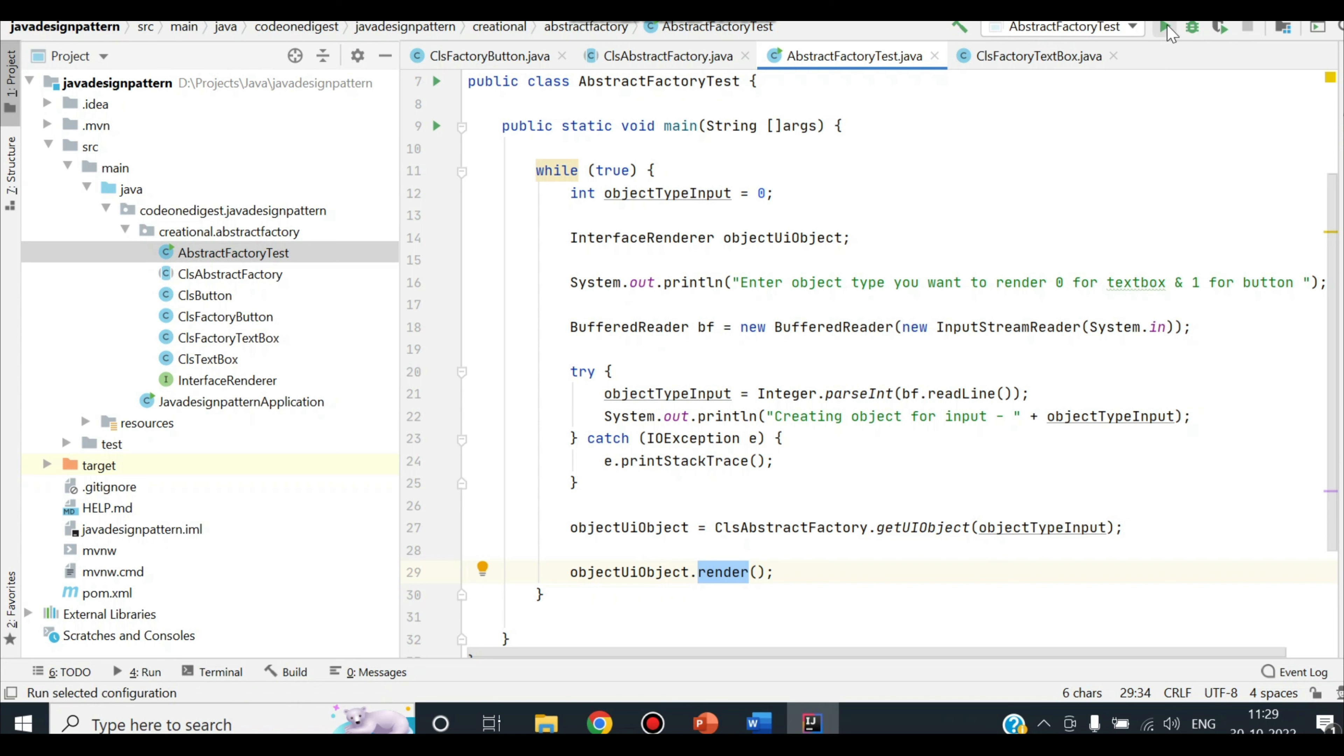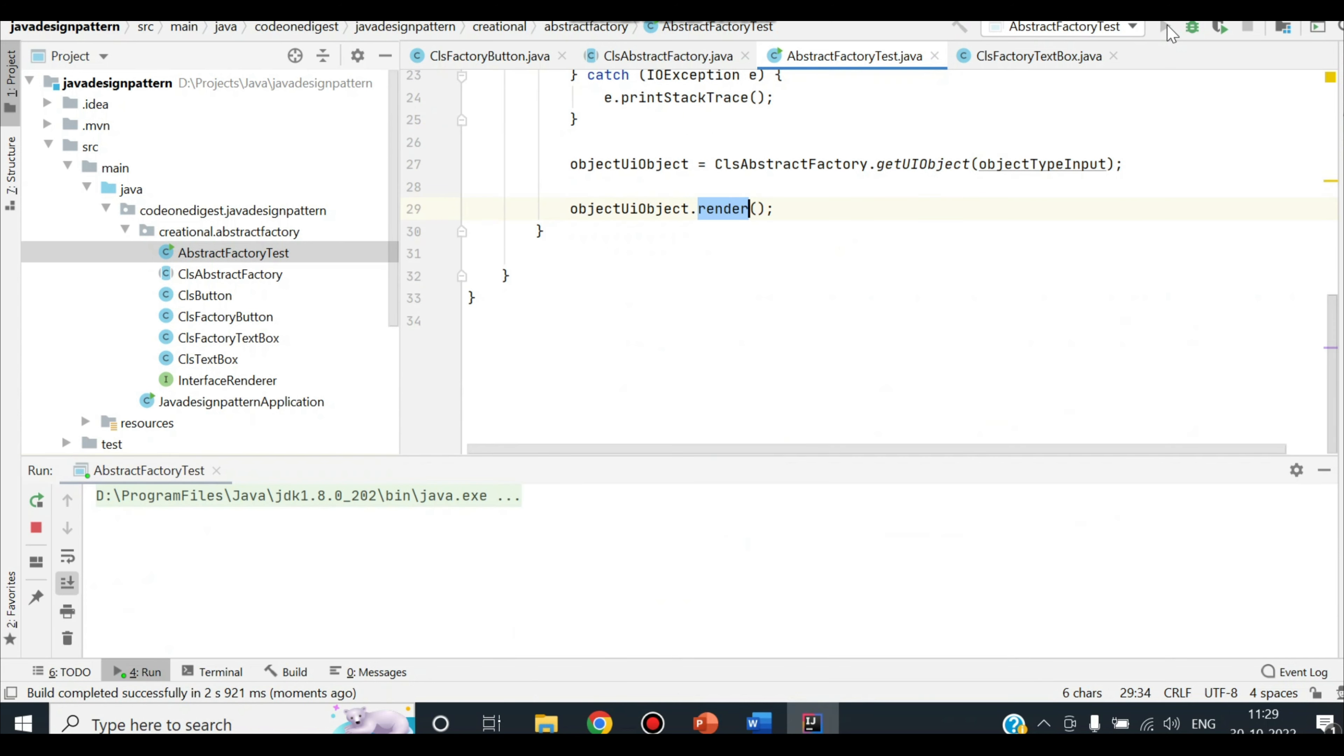I will just run this test and show you. So if I give zero as an input and press enter, it says creating object for input zero and text box is created and rendered. It says text box is rendered. Now let's say this time I give input one and press enter. It says creating an object for input one and button object is created. It says button is rendered.